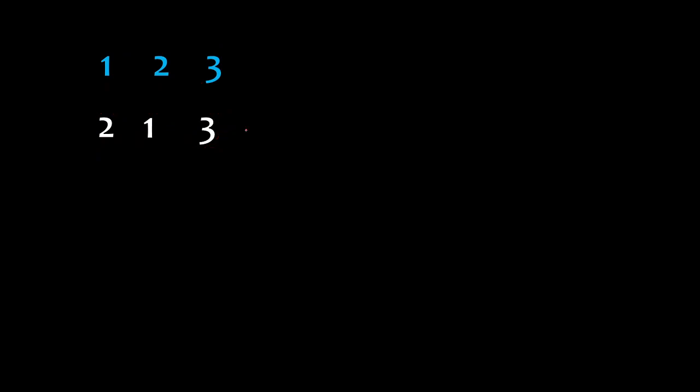But we are looking for sequences in which none of the numbers are at their right place. For example, this one: 2 is at the first place, 3 is at the second place, and 1 is at the third place. We will ask the question: how many such sequences are possible?